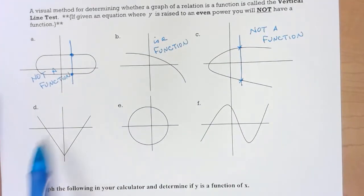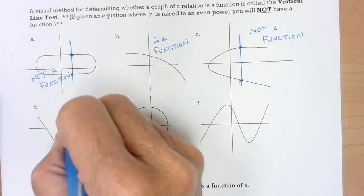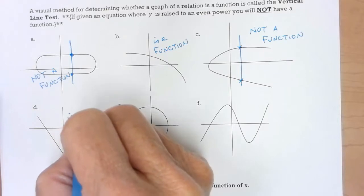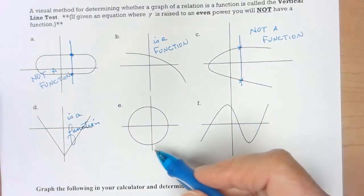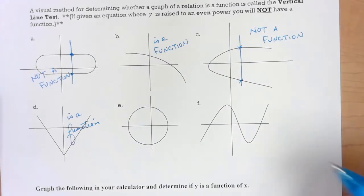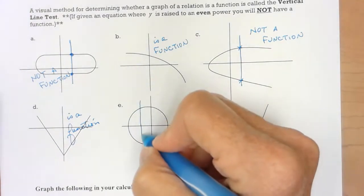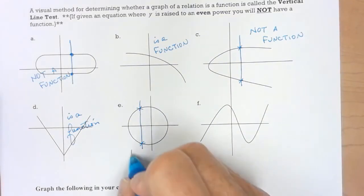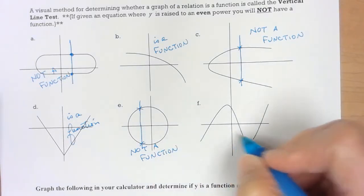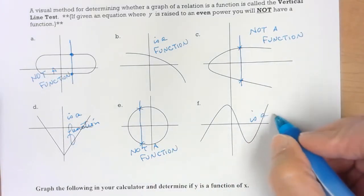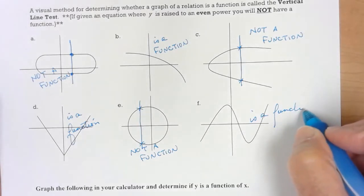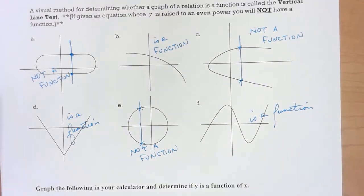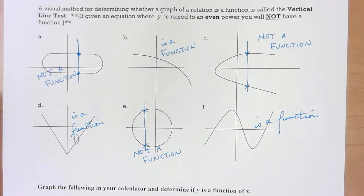What about D? I only can hit it in one place. Notice this is a function. E is not a function. F is a function. That's called the vertical line test. If you can hit it in more than one place it is not a function.